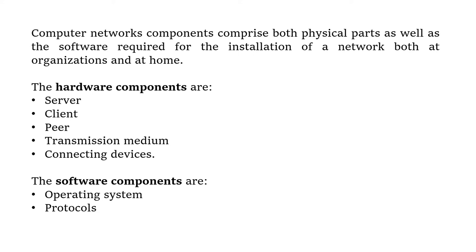The hardware components are: when considering client-server networks, there will be a server computer and client computer; and considering peer-to-peer networks, there will be computers known as peers. When considering any type of network, there should be a transmission medium and connecting devices. The software components are the operating system and the protocols.